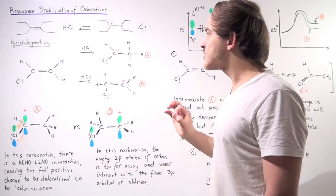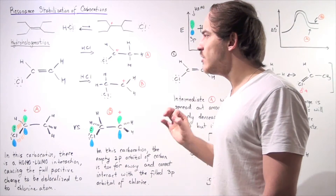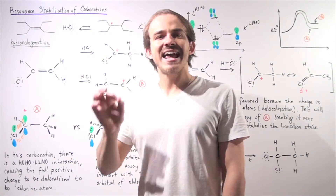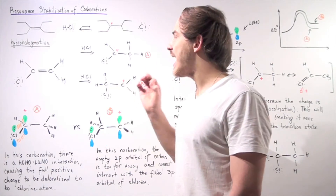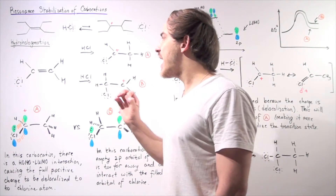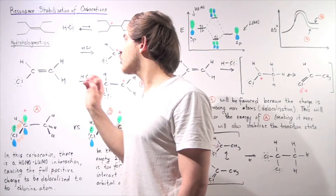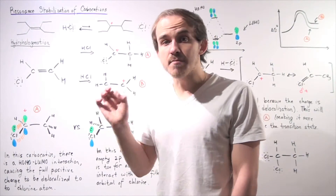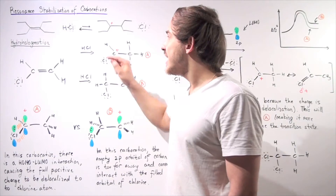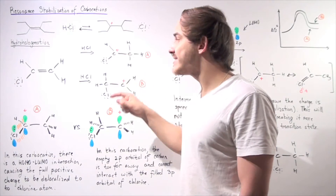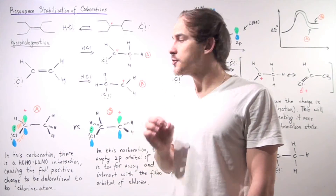Now in this lecture, we're going to talk about a different situation in which we are dealing with an asymmetrical alkene, meaning the left side is not the same as the right side. So now it does matter where our H adds, because in each case we produce a different carbocation intermediate.